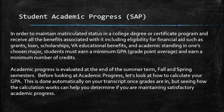Academic progress is evaluated at the end of the summer term, fall, and spring semesters. Before looking at academic progress, let's look at how to calculate your GPA. This is done automatically on your transcript once final grades are in, but seeing how the calculation works can help you determine if you're maintaining satisfactory academic progress.